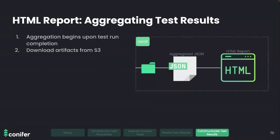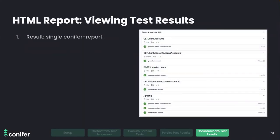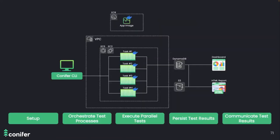The other way Conifer communicates test results is by generating an HTML report at the conclusion of the test run. To do this, we first retrieve data from the S3 bucket, aggregate it into a single file, and save that file to the user's project directory. Once created, the user can open the HTML report and see a complete accounting of everything that occurred: the status of each individual assertion, what passed, what failed, and any other data they would have had access to running the suite locally.